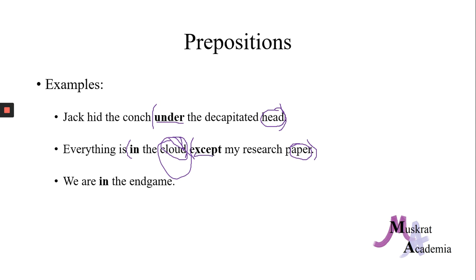This clause is a good example of when you have a preposition that cannot work with our mouse or airplane examples, because except — a mouse can't be except a desk, and an airplane can't be except a cloud — yet except, in this case, is still being used as a preposition. Our last example is: we are in the endgame. In is our preposition, and endgame is our noun of the preposition.